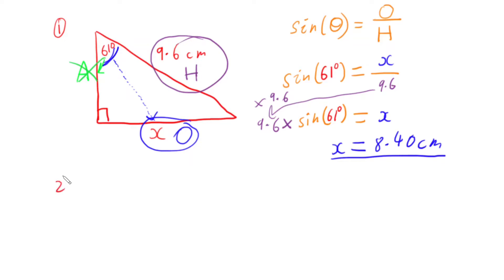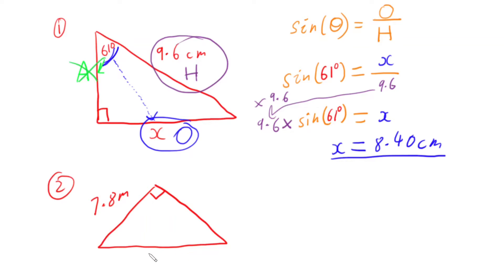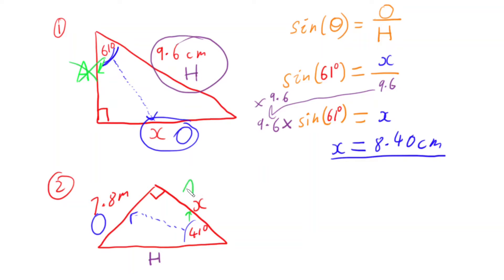Let's have a look at a second one. I've got this right-angled triangle with a right angle, the side 7.8 metres, and an angle of 41 degrees. The unknown side is on the other side. I identify the hypotenuse as the long slopey side, the opposite from the 41-degree angle, and the adjacent as the side next door — which is my unknown X.